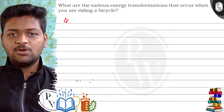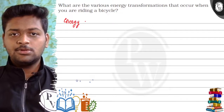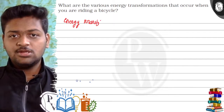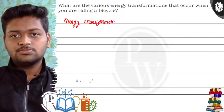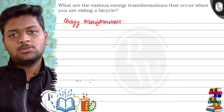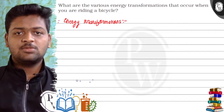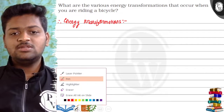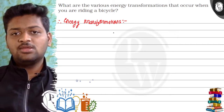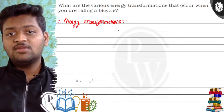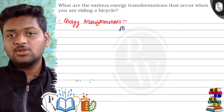They are asking us about various energy transformations. I will represent it in the form of a flowchart. First of all, the energy which is used at the start while riding a bicycle is muscular energy.